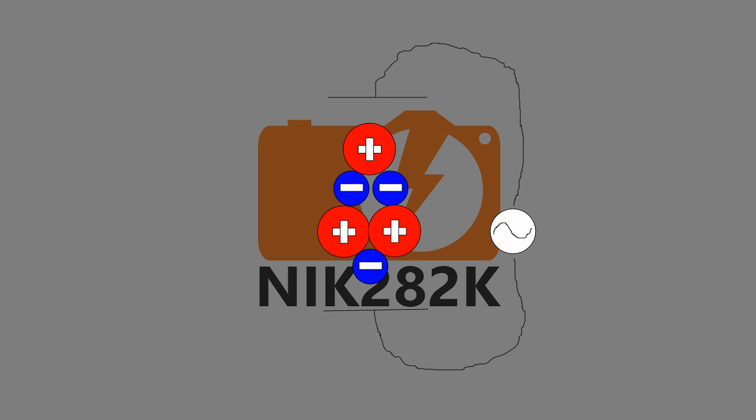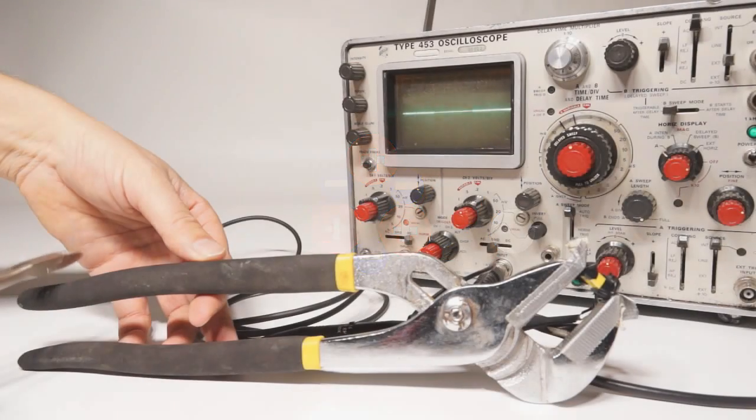These small deformations add up over the length of the crystal, resulting in a very large and powerful deformation. This is what allows the atomizer to work and the speaker in the digital camera.